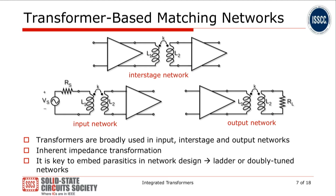Transformers are widely used in the implementation of input, interstage, and output matching networks because of their inherent impedance transformation feature. In the design of the matching network, it is absolutely key to remember that the parasitic elements of the transformer are never negligible and we need to embed them in the design of the networks. We can do that in a couple of different ways, as we will see shortly.